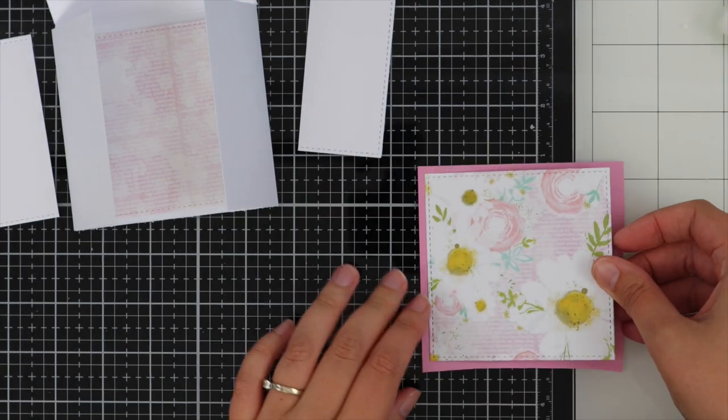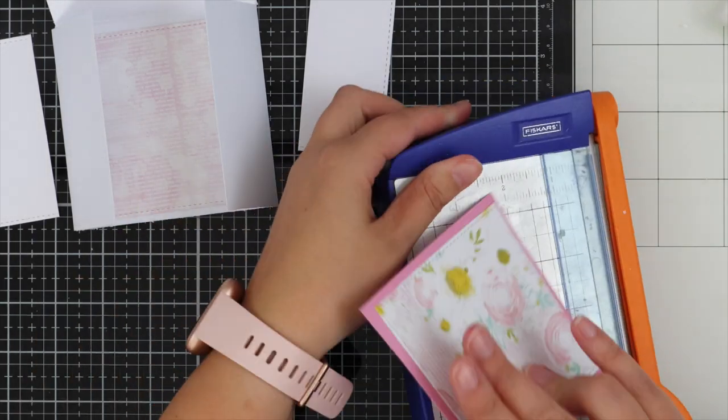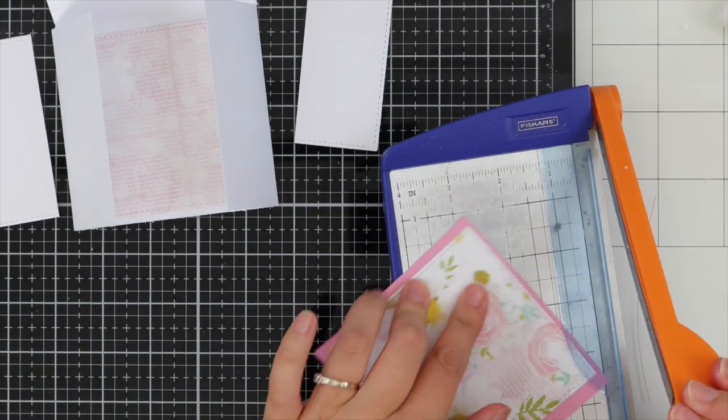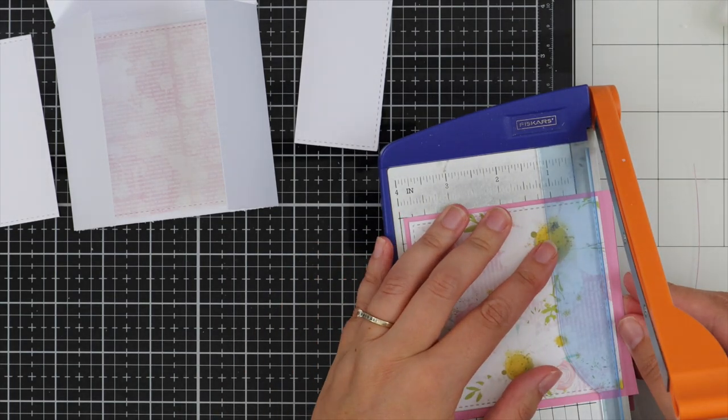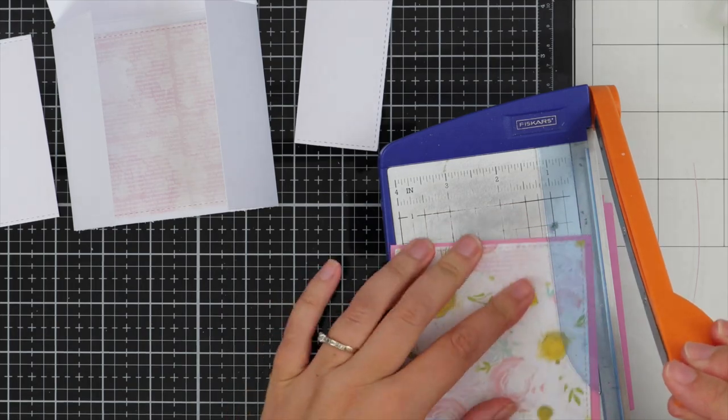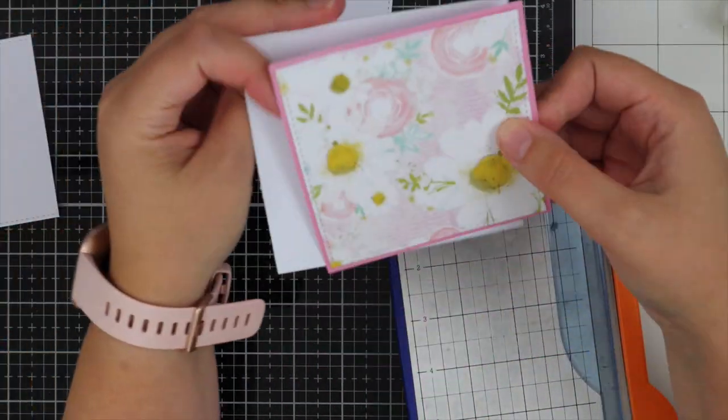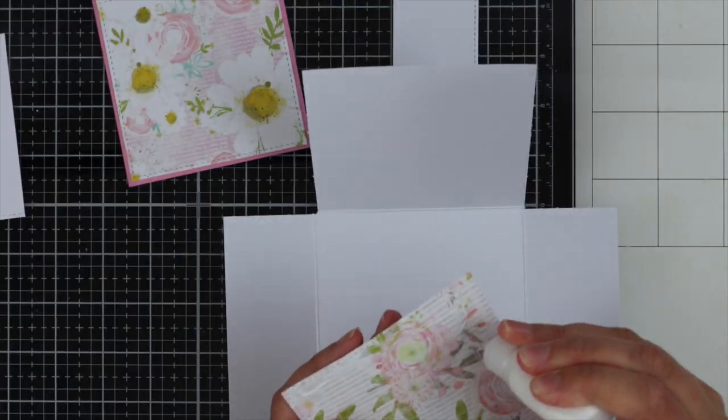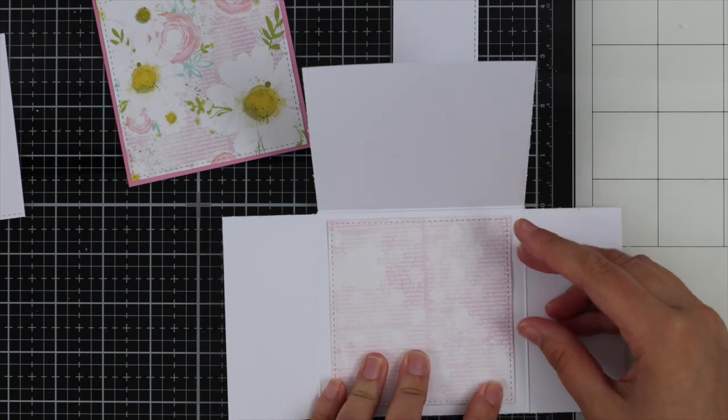I'm adhering some of my pieces together. This is the square piece going on the front of my card. I've got some pink card and I'm using my paper trimmer to add a little edge to this piece.